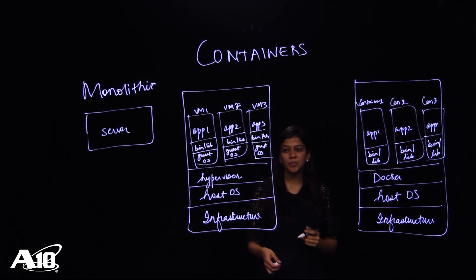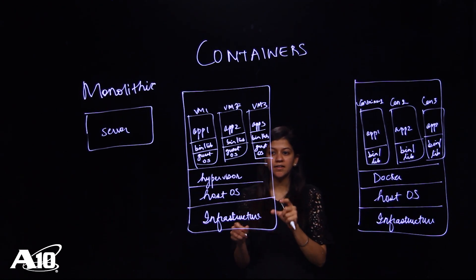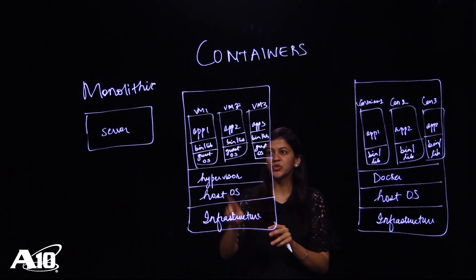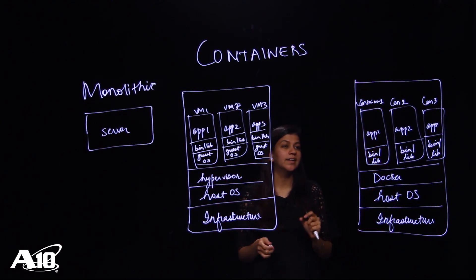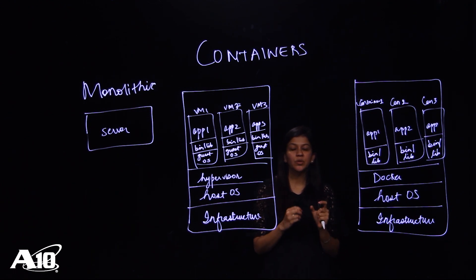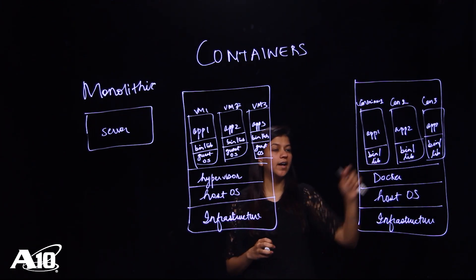What have we done here? Basically virtualization was an infrastructure level construct and what that does is it breaks up a single machine into multiple servers, whereas container is truly an app level construct. It is breaking up the apps into individual processes and operations and these are truly lightweight and highly scalable.